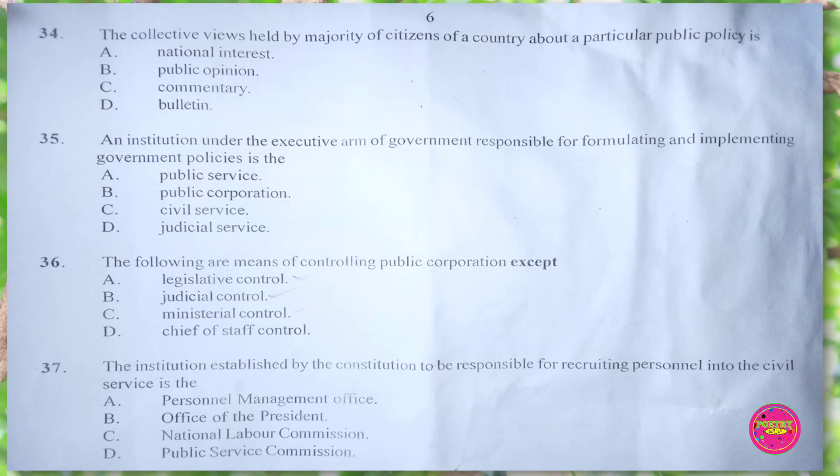Question 36. The following are means of controlling public corporations except: A. legislative control, B. judicial control, C. ministerial control, D. chief of staff control. The correct answer is D. chief of staff control.